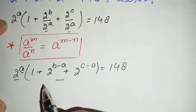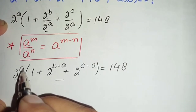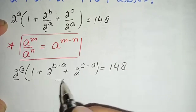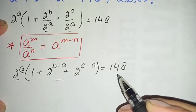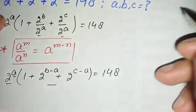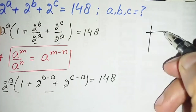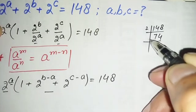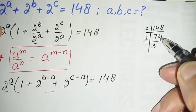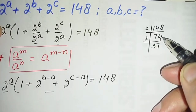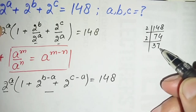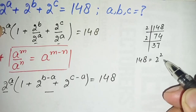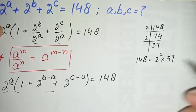Looking at the left hand side, we have a product of two expressions: 2 raised to power a, which is an even expression for any real number a, and the bracket part which is an odd expression. So we need to factorize 148 as an even number times an odd number. Since 148 is divisible by 2: 148 = 2 × 74 = 2 × 2 × 37, and 37 is a prime number.